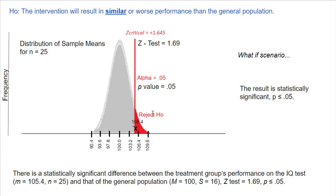Here's how it would look written up APA style for a mean of 105.4: there is a statistically significant difference between the treatment group's performance (M = 105.4, N = 25) and that of the general population (M = 100, S = 16), Z = 1.69, p ≤ 0.05. For a more extreme example, if the sample mean was 107.2, the Z test would be 2.25 — more than two standard errors above the null-specified mean — with a p-value of 0.01. Since the Z test meets or exceeds the Z critical and the p-value is ≤ 0.05, we could reject the null. These are two different ways to know you can reject the null.